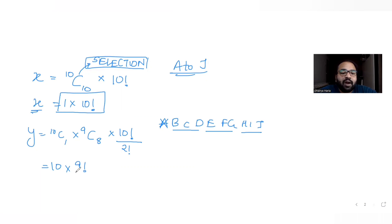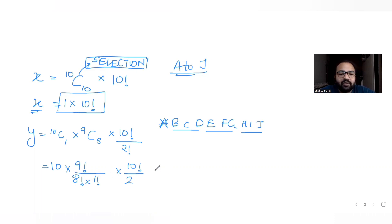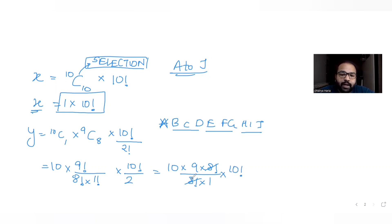Solving further: 10C1 = 10, and 9C8 = 9!/8! = 9 (since 1! = 1). So Y = 10 × 9 × 10! / 2! = 90 × 10! / 2 = 45 × 10!.